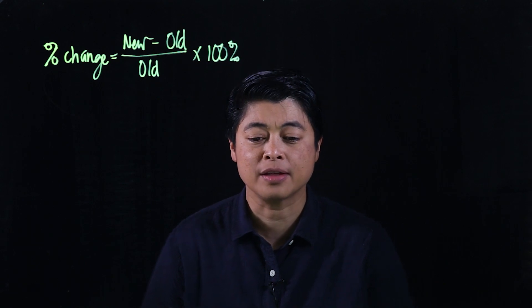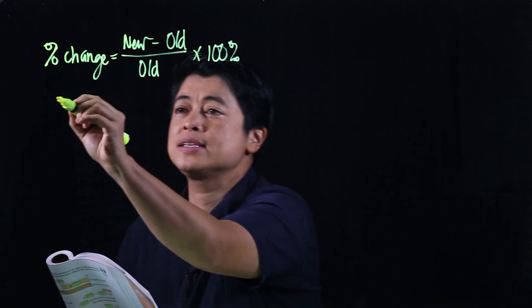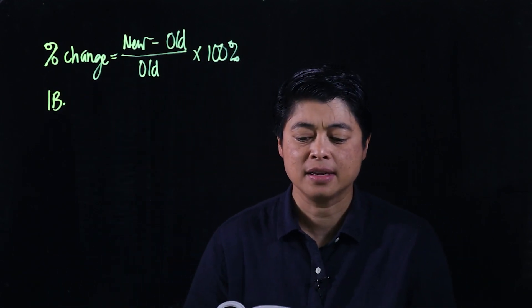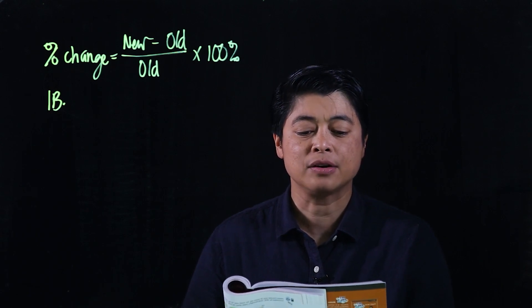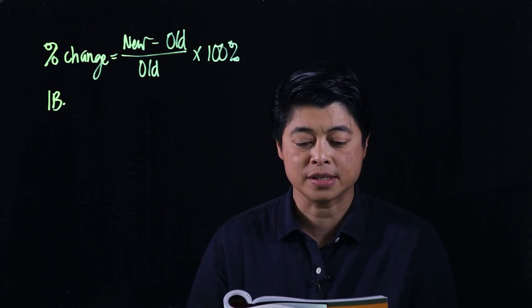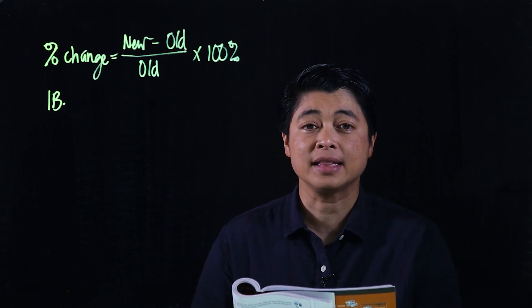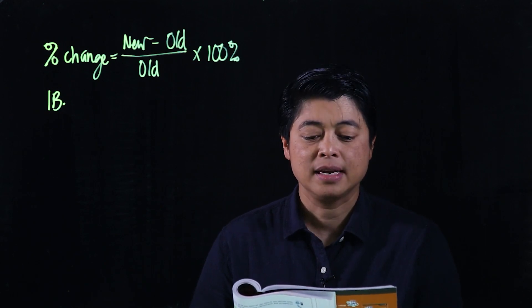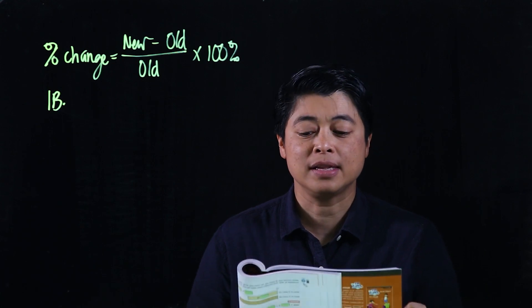So on page 113, problem 1B says the usual price of a ticket to the two conservatories at Garden by the Bay is $20. Yishuan buys one ticket at a discount of 12 percent. How much does she pay for the discounted ticket?